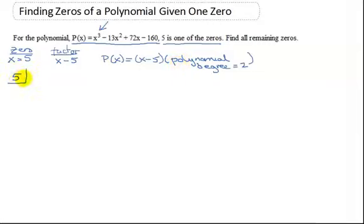In synthetic division, you put the zero here. Then I need my coefficients. Check, do we have all our terms or is anybody missing? I have x cubed, x squared, x, and a constant. Nobody's missing. So the coefficient of the x cubed is 1, of the x squared is negative 13, of the x is 72, and then I have my constant term negative 160. Remember, when I use synthetic division, knowing this is a factor, I better get a remainder of 0. If I don't, it means I've done something wrong.